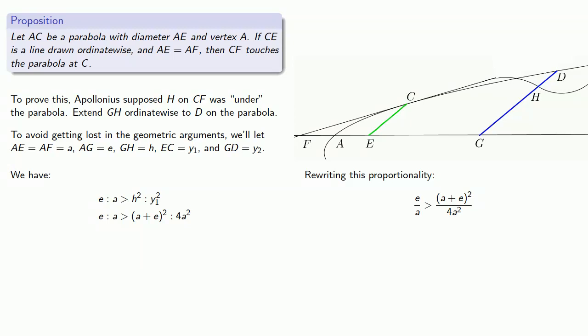Now we can rewrite this proportionality as E over A is greater than A plus E squared over 4A squared. Then cross multiplying and simplifying, note that E is greater than A. And this means that A plus E is greater than 2A. So A plus E squared is greater than 4A squared.